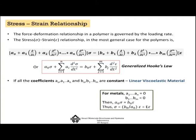The first point is: what is the stress-strain relationship of a polymer and how is it different from the stress-strain relationship for metals? For the simplest case, if it is a single stress and a single strain — not a three-dimensional tensorial representation — the relationship is sigma equals E times epsilon, meaning stress is directly proportional to strain. However, for the polymer it is not like that.